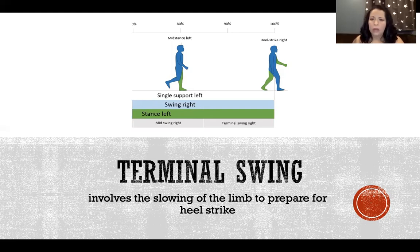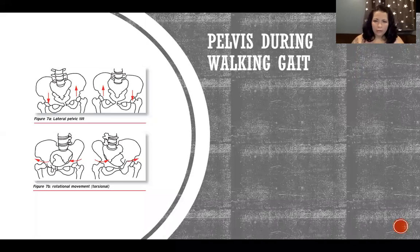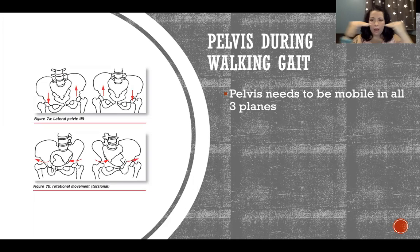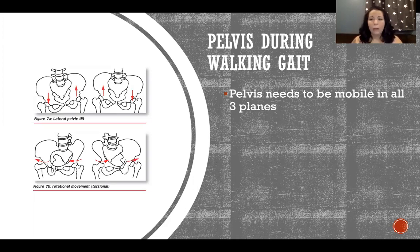During walking gait, the pelvis needs to move in all three planes — front to back, up and down, and side to side — so we need triaxial movement of the pelvis. If movement is restricted in any of those three planes, that's hypomobility, and we'd have to compensate with hypermobility above or below that level — at the knees, ankles, or spine — to make up for the restricted pelvic movement.